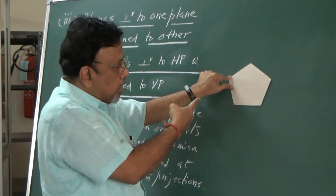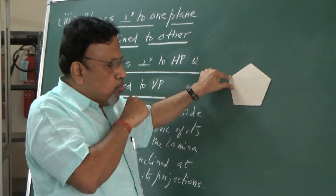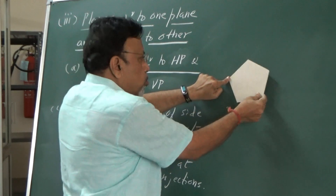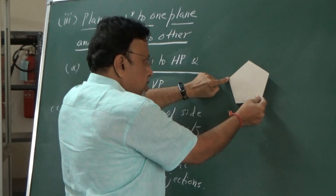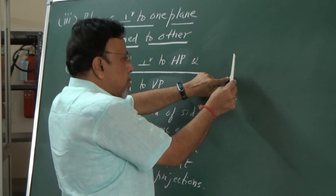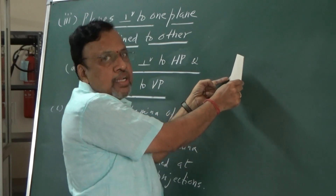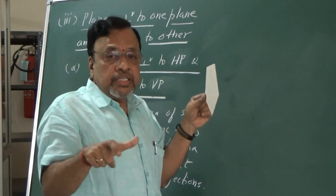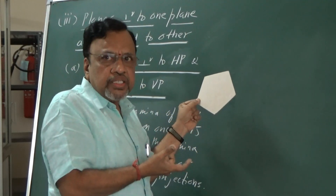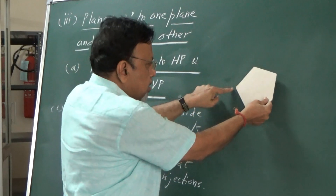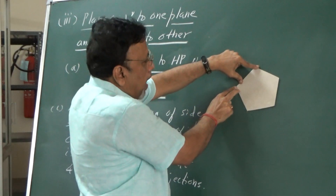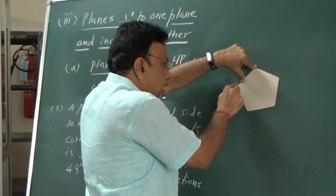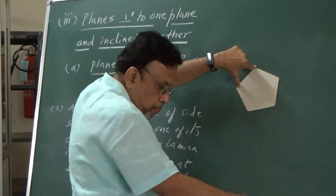I know that I am going to start from the front view. Now tell me about the orientation — can I simply incline it randomly with reference to VP? I cannot do that, because I want everybody to do a unique solution. A unique solution is possible when everybody draws in the same fashion. So the rule is: this particular corner and the center of the lamina — if I join that line, it should be parallel to HP.